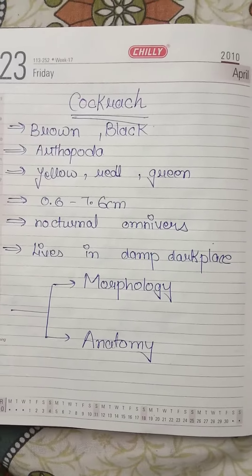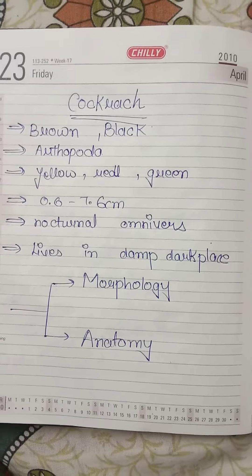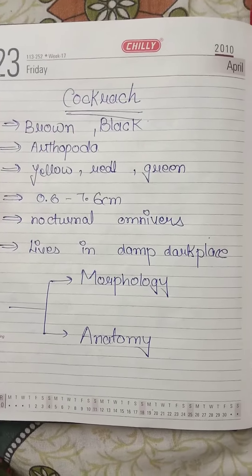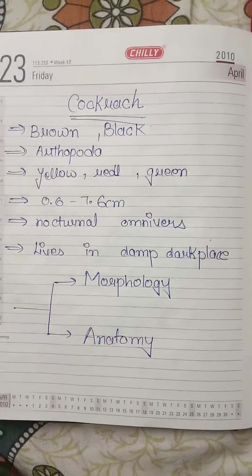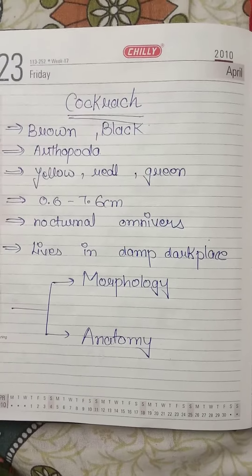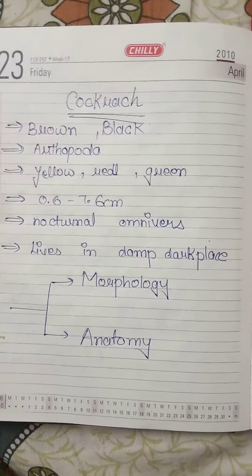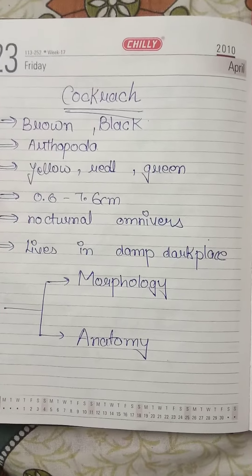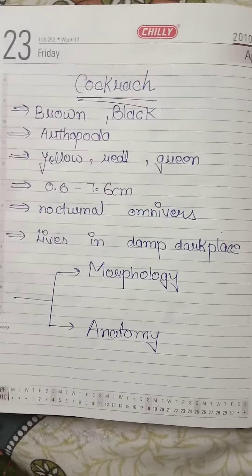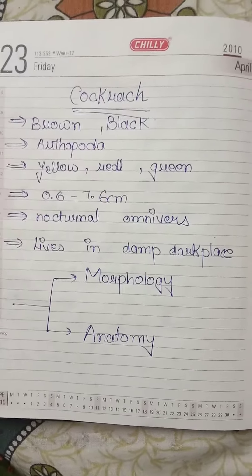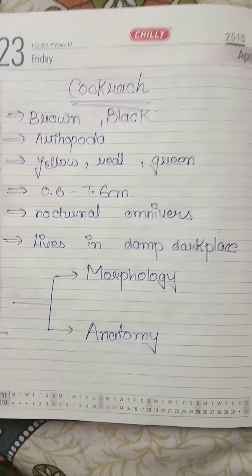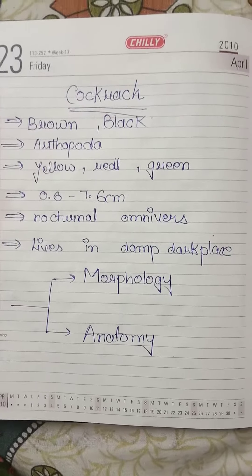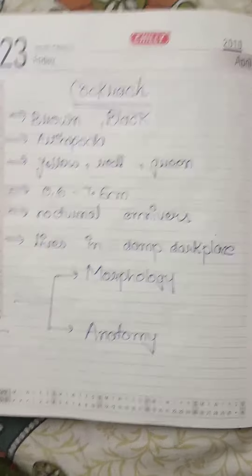Its size is 0.6 to 7.6 centimeter. It is a nocturnal animal, means it comes out from their shades only at the time of night, and omnivorous. It lays eggs and lives at a dark and damp place.